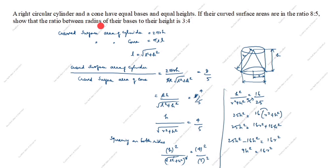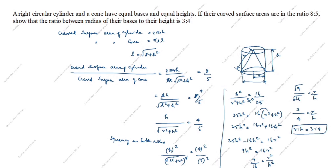You see what we need to prove — r is to h. So r squared divided by h squared equals 9 by 16. Taking square root on both sides: root 9 divided by root 16 equals r by h. Root 9 is 3, root 16 is 4, equal to r by h. So r is to h is equal to 3 is to 4. In this question, radius of the base to the height is 3 is to 4. Hence proved. Thanks for watching this video.